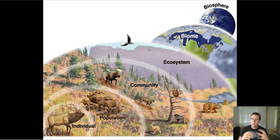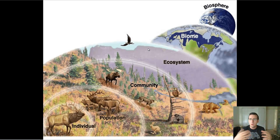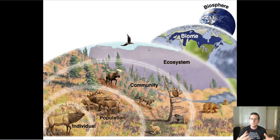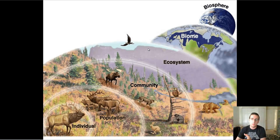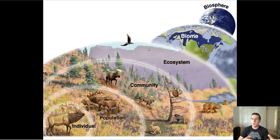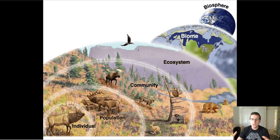Different areas of ecology focus on different parts of these levels. In this first lecture series, we're going to be talking mostly about community ecology and a little bit about ecosystem ecology — how animals interact with other animals and some of the abiotic parts of their environment. Then we'll go into ecosystems and biomes, learning about the different biomes on Earth. After that, we'll hit population ecology and how populations change over time. Finally, we'll finish with environmental science, which really looks at all these levels. That is ecology and its levels of organization.